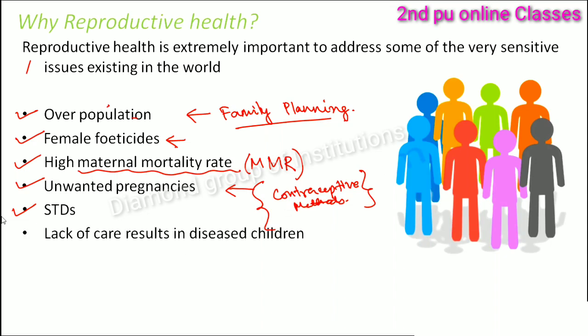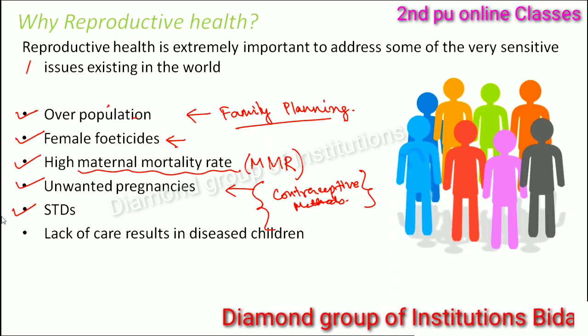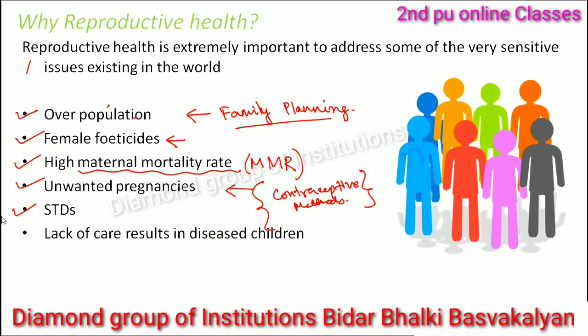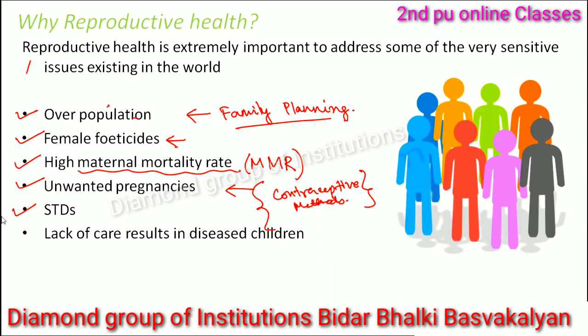Lack of care results in diseased children. It is often seen that people neglect the care of a pregnant woman or a newly born child, and that results in diseased children. If children are diseased, they contribute less to society and can become a burden. When there is an option to prevent making them diseased, that is always better — prevention is always better than cure. So there is no reason to neglect care when you know it can result in diseased children.